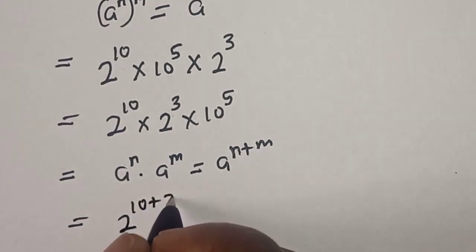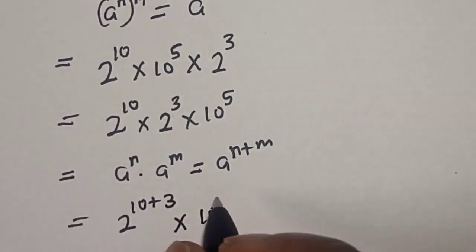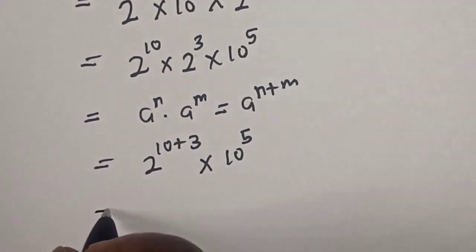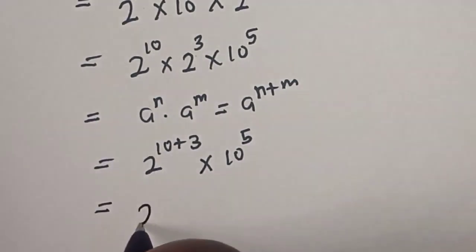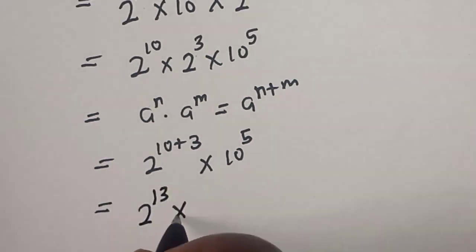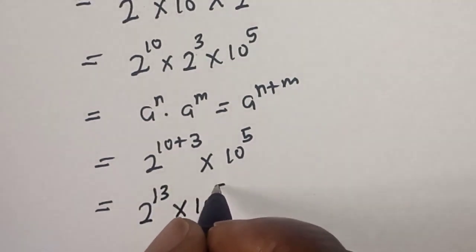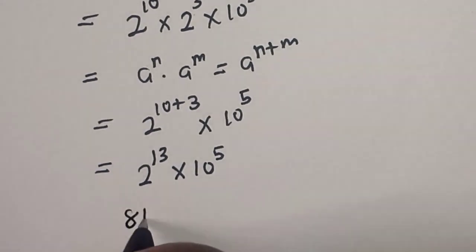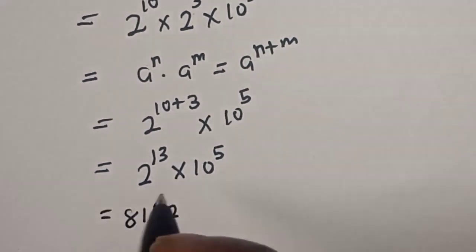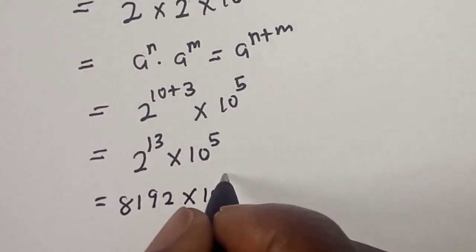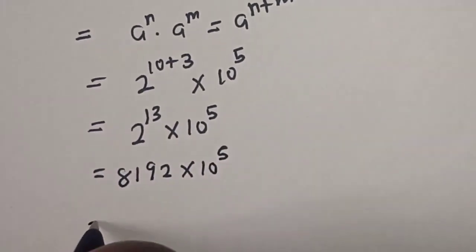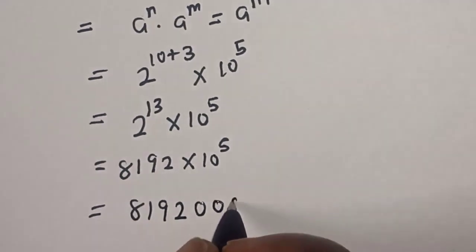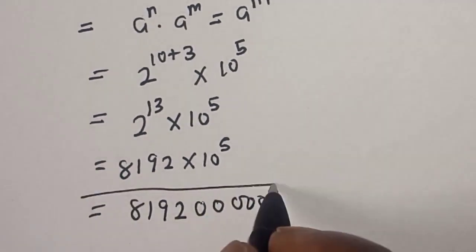So we have 2 to the power of 10 plus 3, multiplied by 10 to the power of 5. This is equal to 2 raised to the power 13, multiplied by 10 raised to the power 5. And 2 raised to the power 13 is 8192, multiplied by 10 raised to the power 5. Our final answer is 819,200,000.